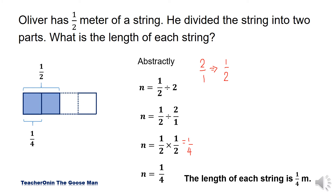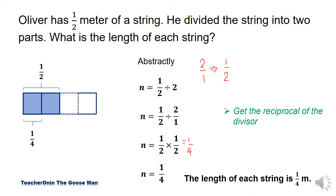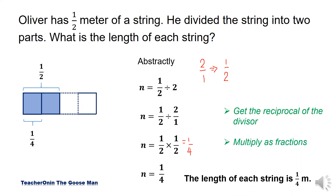To summarize what we have done in dividing fractions: first, we get the reciprocal of the divisor. Then after that, we multiply as fractions.